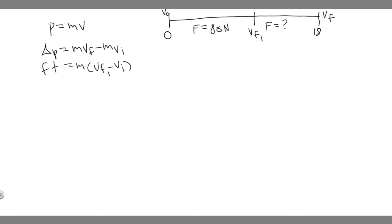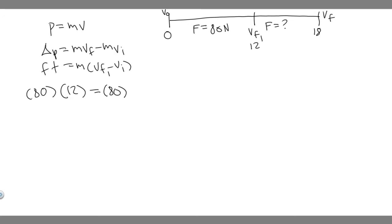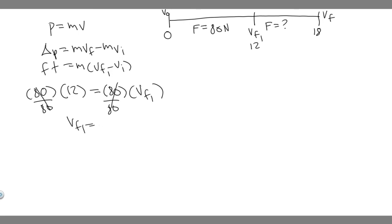The constant 80 newtons is applied for 12 seconds, so 80 times 12 equals the mass (80 kilograms) times (v final one minus v initial). The crate starts at rest, so v initial is zero. That gives 960 equals 80 times v final one. Dividing both sides by 80, the 80s cancel and v final one equals 12 meters per second. So the speed at the end of the first 12-second interval is 12 meters per second.